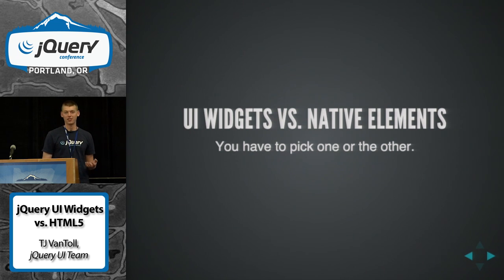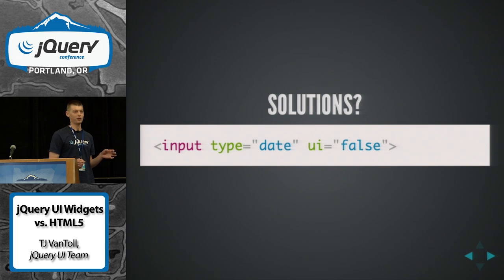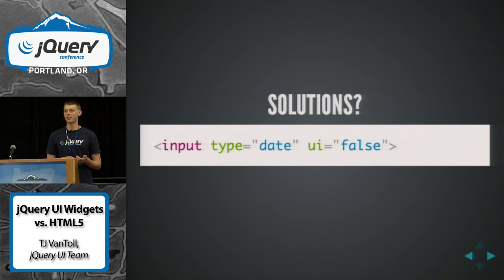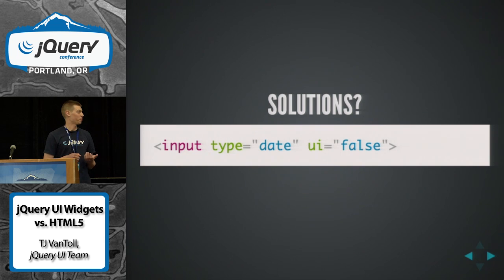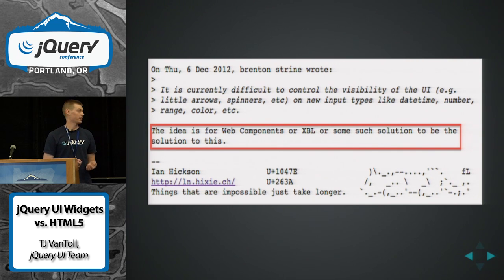So this comes up a lot — we want to get the best of both worlds. We want a date picker that will tie into native validation, but that we can also provide our own calendar to implement. There have been several proposed solutions. One idea is providing an attribute that tells the browser, 'I don't want you to provide any picker for this — I've got this, but give me the ties into the other stuff.' But the blanket response from the people who work on the specification is that the long-term solution for this is Web Components — that's going to be how we solve these problems in the future.